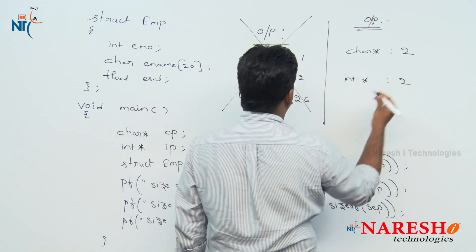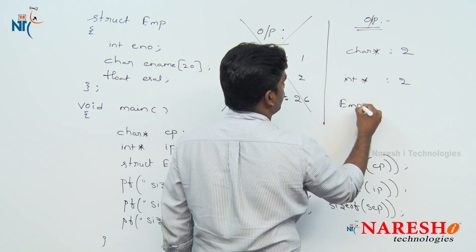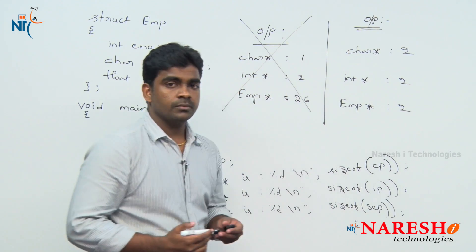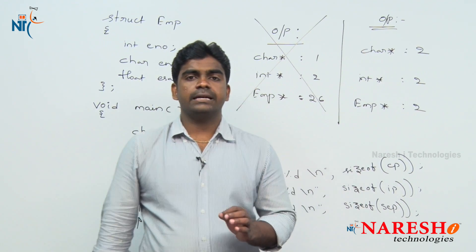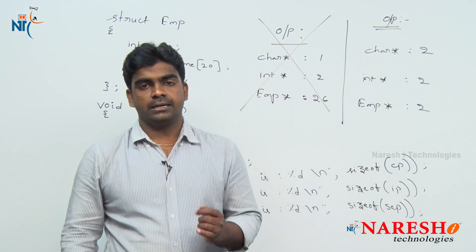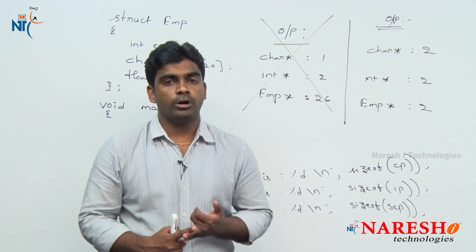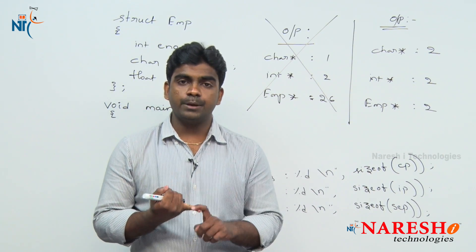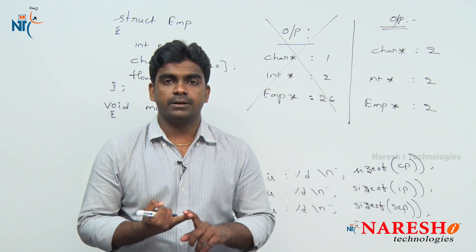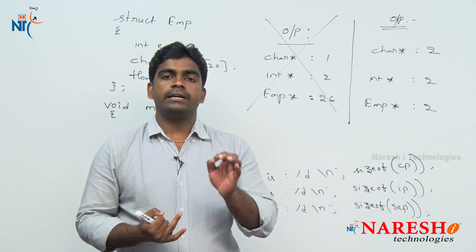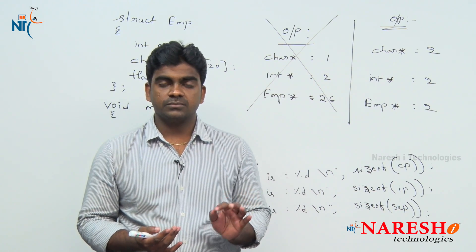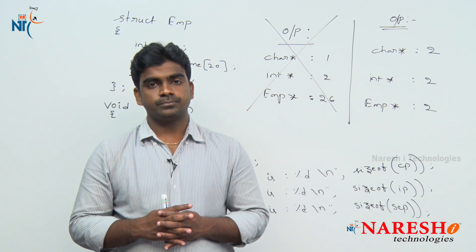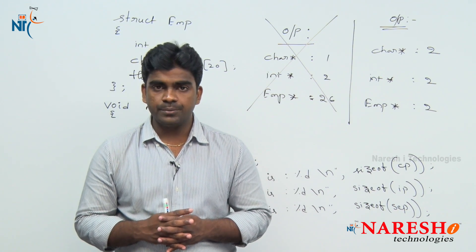The actual output is: 2 bytes, 2 bytes, and employee pointer also 2 bytes. Any pointer you take — character pointer, float pointer, double pointer, employee pointer, function pointer, array pointer, string pointer — no matter the type, it occupies either 2 bytes or 4 bytes.